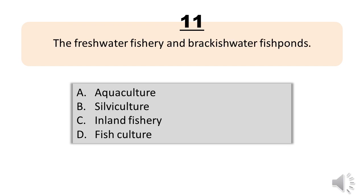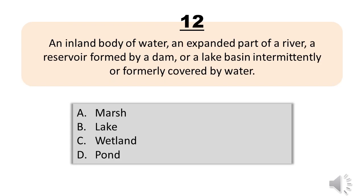Number 11. The freshwater fishery and brackish water fish ponds. A. Aquaculture. B. Silviculture. C. Inland fishery. D. Fish culture. The correct answer is Letter C. Inland fishery.